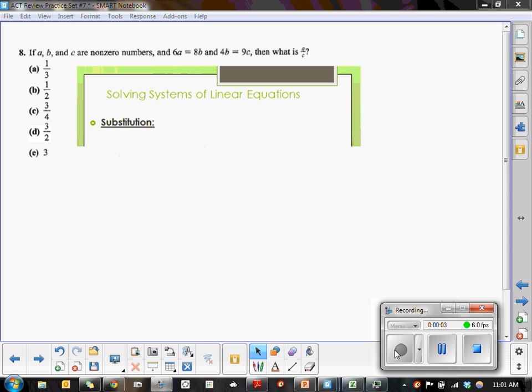Question 8 says if A, B, and C are non-zero numbers and 6A equals 8B and 4B equals 9C, then what is A over C?